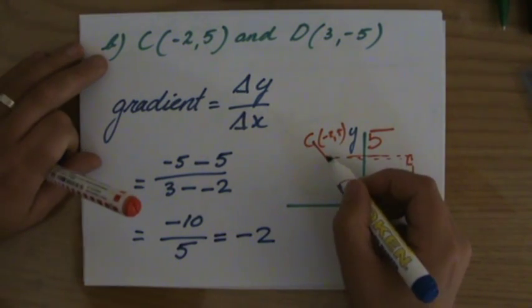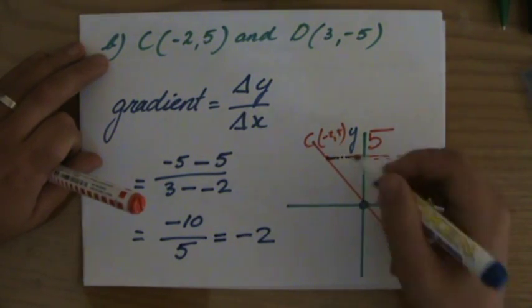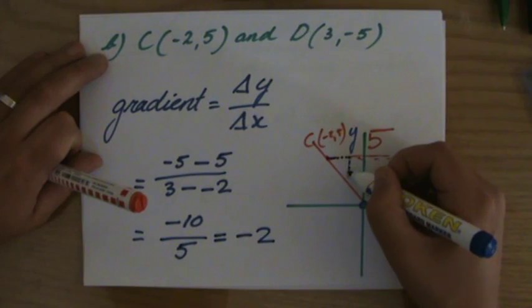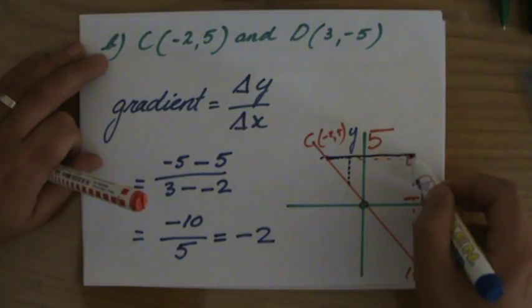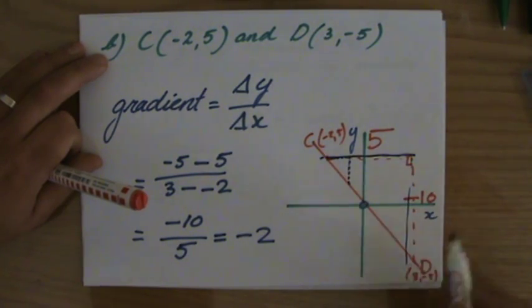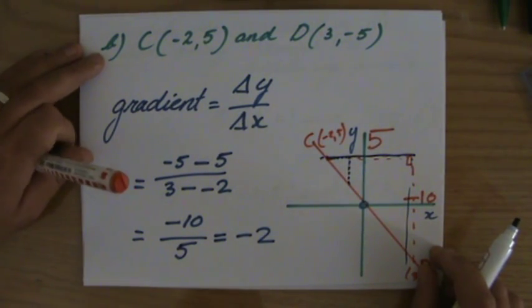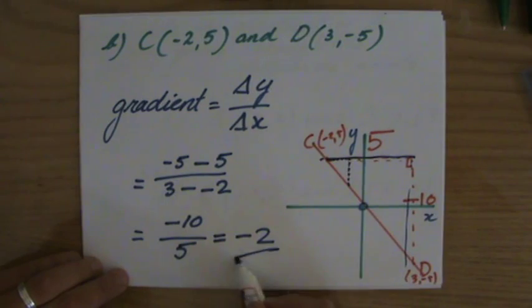That means that if he would go one step to the right, he goes minus two steps up, and so two steps down. So five steps to the right, indeed five times minus two, he would go minus ten steps up, so ten steps down.